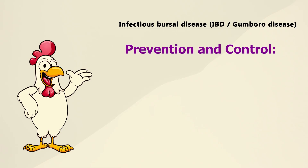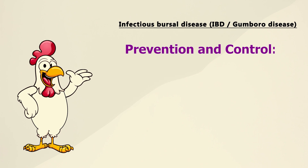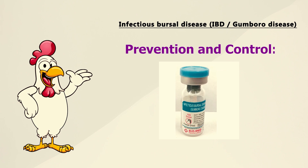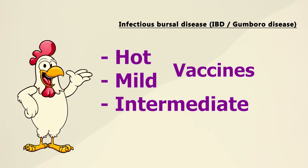For prevention and control of this disease, prevention is very important because there is no treatment or remedy for IBD. Prevention is only by vaccination of the chicks, particularly at 12 to 14 days of age, using an IBD live vaccine. There are three types of live vaccines: hot vaccine, mild vaccine, and intermediate vaccine. Always consult a veterinary doctor regarding which vaccine to use.